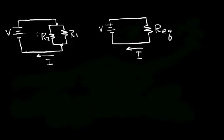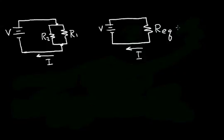Now let's consider two resistors in parallel. The circuit on the left has resistor R2 in parallel with resistor R1. The circuit on the right has one equivalent resistor, R_eq, which is equivalent to the parallel combination of R1 and R2. From Ohm's Law, R_eq is the voltage across the resistor divided by the current through the resistor.